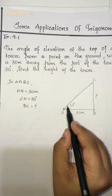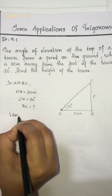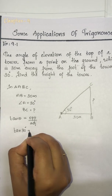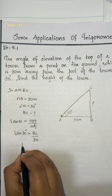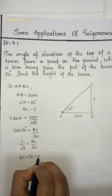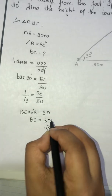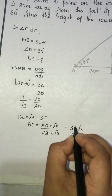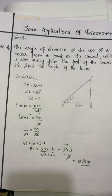To find BC, we use the opposite side by adjacent side, which is tan theta. Tan theta equals opposite side by adjacent side, so tan 30 equals BC divided by AB, which is BC divided by 30. Tan 30 is 1 by root 3, so 1 by root 3 equals BC by 30. Therefore BC into root 3 equals 30, giving BC equals 30 by root 3. Rationalizing, we multiply numerator and denominator by root 3 to get 30 root 3 divided by 3, which equals 10 root 3 meter. So the height of the tower is 10 root 3 meter.